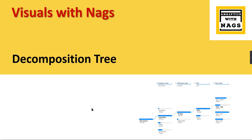Welcome to Analytics with NAGS. This is another video in the Visuals with NAGS series where I'm going to discuss the decomposition tree. This visual is used to analyze a particular measure against different dimensions — in a nutshell, that is the definition. Let us try to understand more about this visual and what capabilities it can give you.